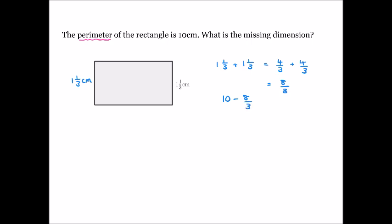The total perimeter is ten centimetres, so we subtract eight thirds from ten. Writing ten as ten over one, we create a common denominator by multiplying the numerator and denominator by three to get thirty thirds. Thirty thirds minus eight thirds: subtracting numerators gives thirty minus eight equals twenty-two, so we get twenty-two thirds. That represents the combined length of the two remaining sides.